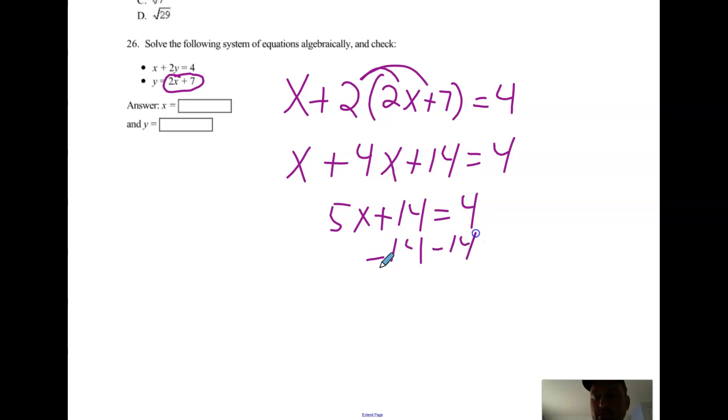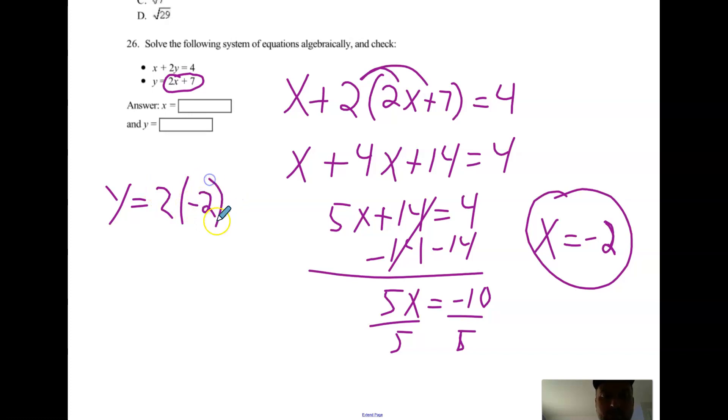Subtract 14, subtract 14. 5x equals negative 10. Divide 5, divide 5. X equals negative 2. Once you get x, how do you get y? Plug it in. Which equation doesn't matter. I don't know, do the second one. Y equals 2 times negative 2 plus 7. Y equals negative 4 plus 7. Y equals 3. So it's not just negative 2, it's not just 3, it's the ordered pair (negative 2, 3).